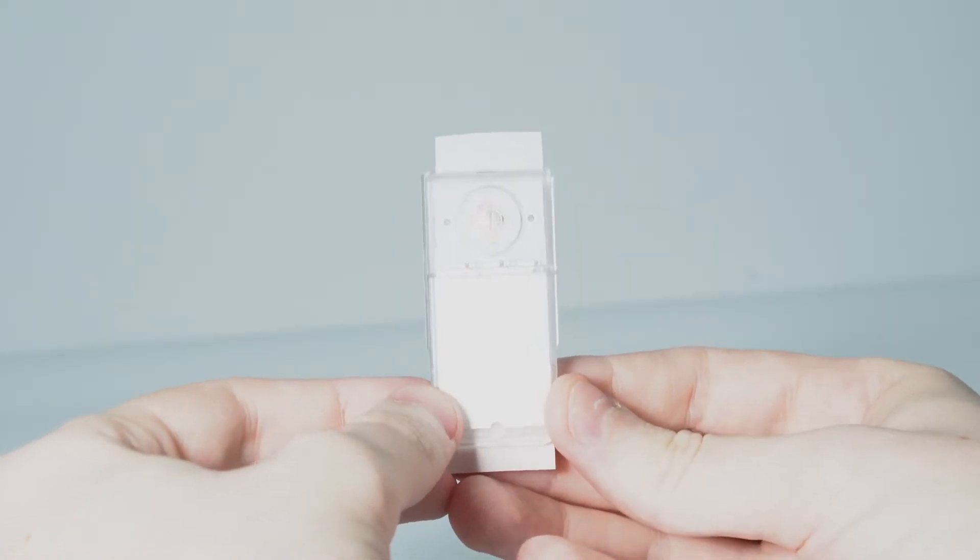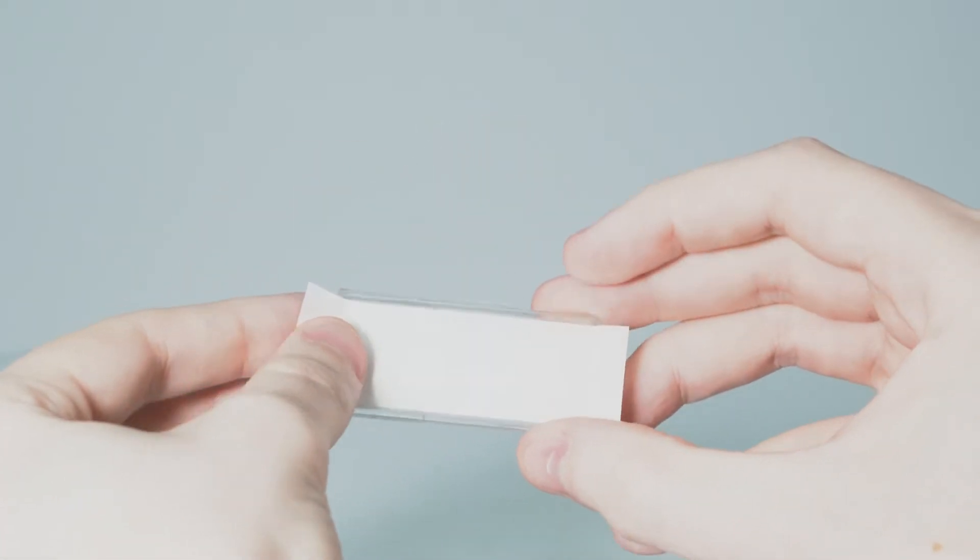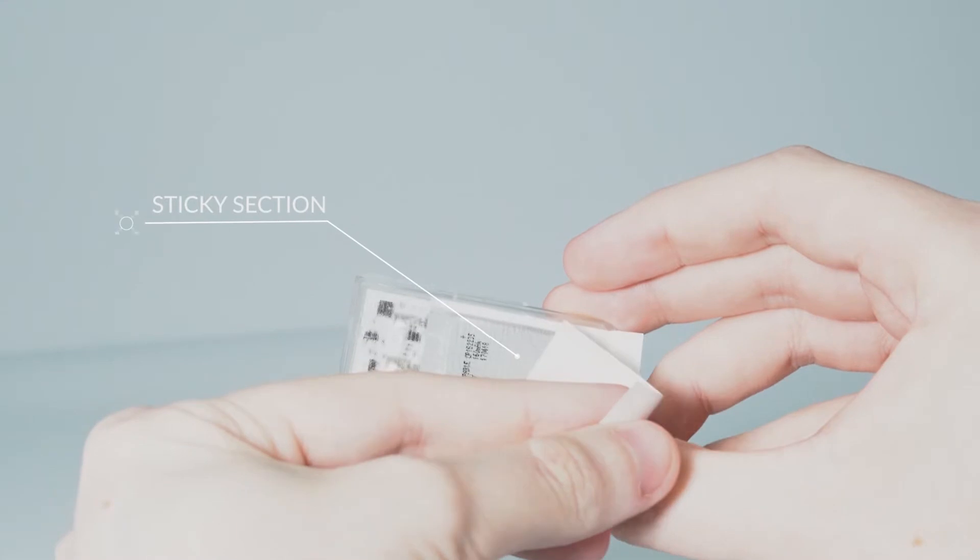Once opened, you'll see the sticky section is covered. When you're ready, peel back the cover to expose the adhesive.